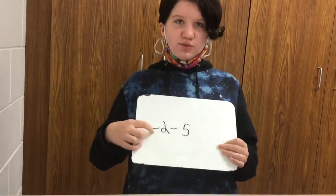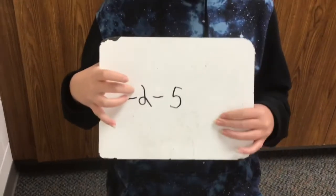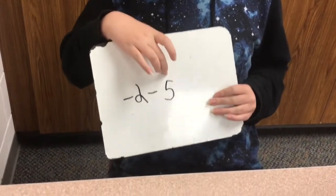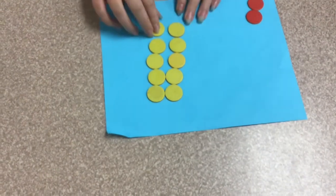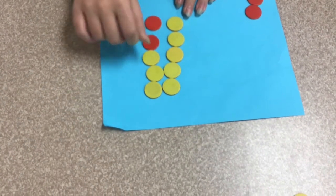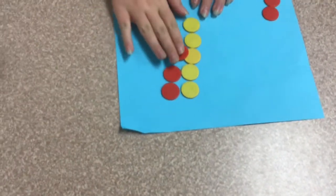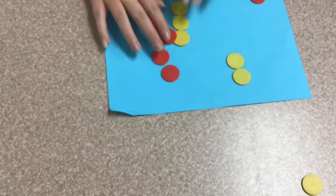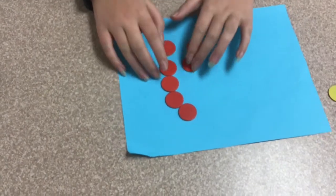Next we are going to do negative 2 minus positive 5. So we start out with two groups of positive 5, but then we make them into groups of 0. So it would end up to be negative 7.